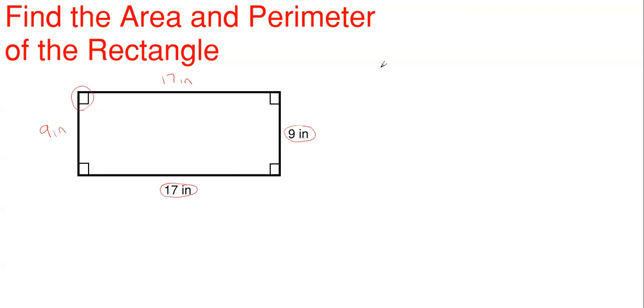So how do we determine the area here? Well, the area for a rectangle is given by this formula. It is going to be your length times your width, where the length in this case will be 17 inches in the horizontal direction, and your width will be this vertical dimension of nine inches.